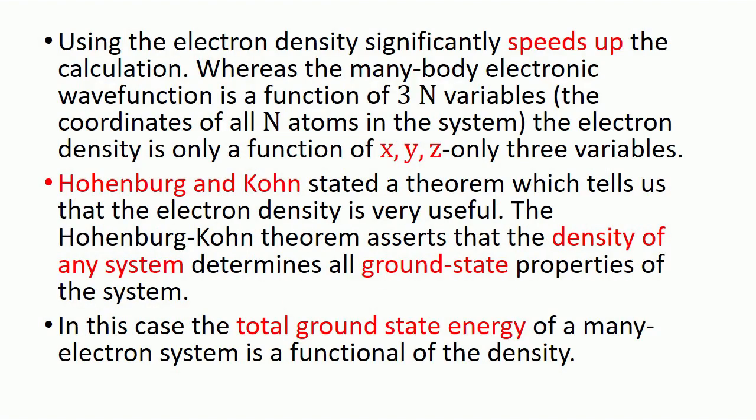Using the electron density significantly speeds up the calculation. Whereas the many-body electronic wave function is a function of 3N variables. Whenever you read density functional theory, you will always see mention of 3N variables.